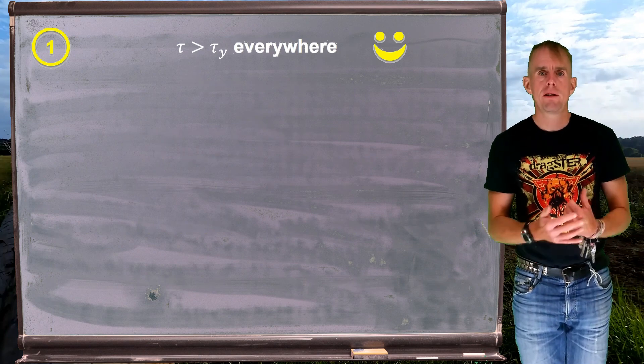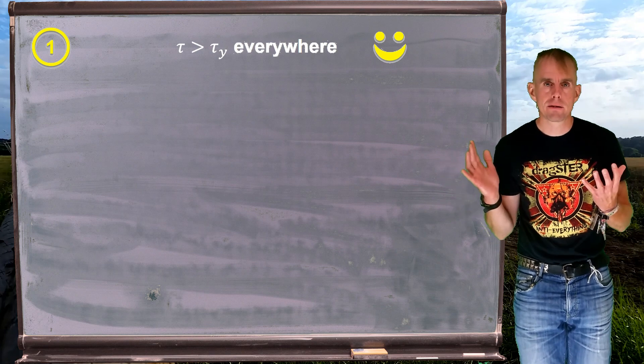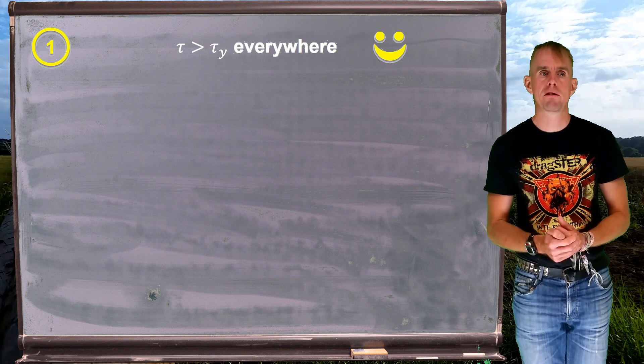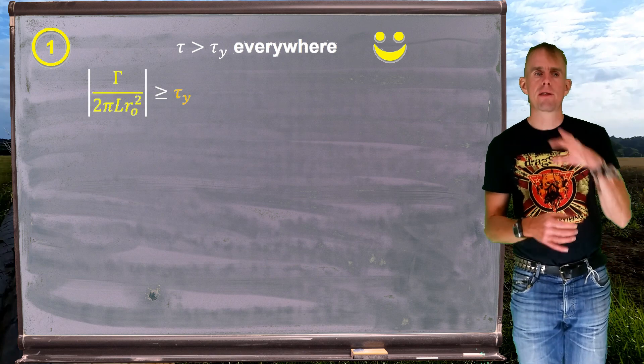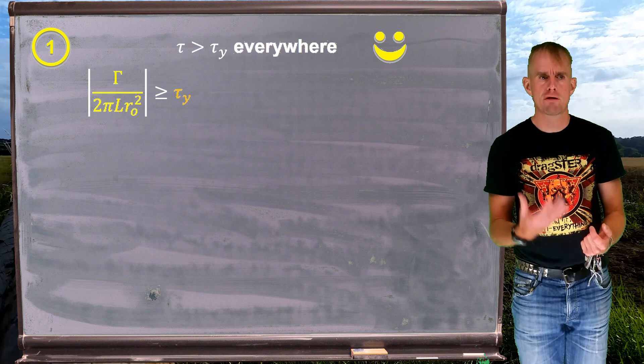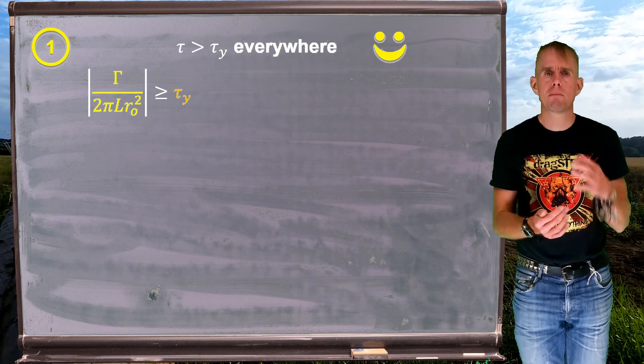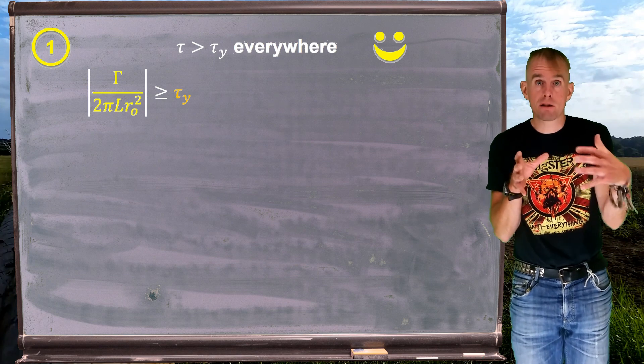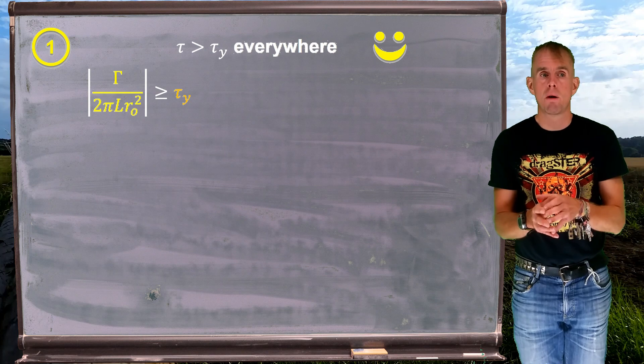So if our fluid in the gap is yielded everywhere, that means everywhere the shear stress tau has to be greater than tau y. So if we think about the relationship between torque, big gamma, and shear stress tau, we can say that gamma over 2 pi L r0 squared, r0 is the radius of my outer cylinder, is greater than or equal to tau y.